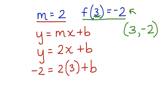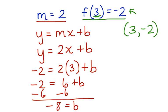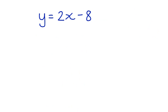We have negative 2 is equal to 6 plus b. Now let's solve for b. Negative 8 is equal to b. Now we can finally write the equation: y is equal to 2x minus 8. Our work is complete.